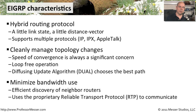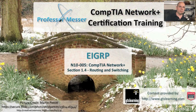EIGRP is also designed to be very efficient in the way that it uses bandwidth. The mechanism for discovering other routers on the network is done very cleanly, and it uses something called the Reliable Transport Protocol, or RTP, to communicate between those routers. That RTP protocol is also proprietary to Cisco. But the combination of these things together makes EIGRP not only very flexible, but also very efficient to use on the network.